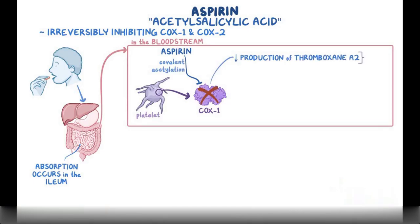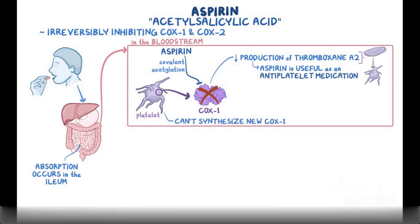Since thromboxane A2 is a platelet activator, this makes aspirin useful as an anti-platelet medication. Since aspirin irreversibly prevents the platelets from synthesizing new COX-1 enzymes, aspirin's effect will persist until there are enough new platelets produced that are able to produce COX-1 enzymes. This leads to increased bleeding time without affecting PT or PTT.